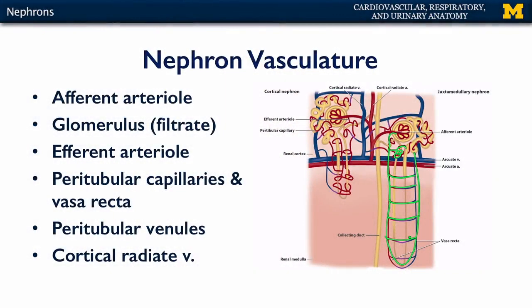The vasa recta are very important for pulling away water from the nephron loop. Following the peritubular capillaries, we have peritubular venules that feed into the cortical radiate veins and then back into the arcuate veins. Those arcuate veins go back into interlobar veins, back into segmentals, and then finally back into the renal veins.